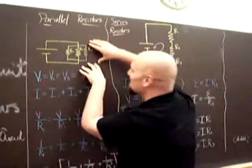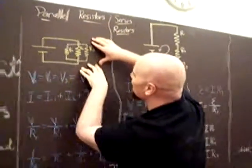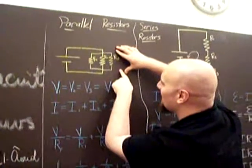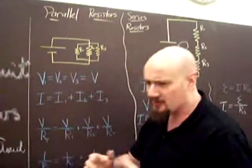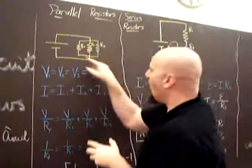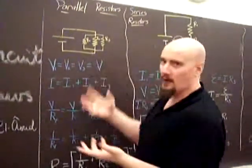So let's start with some parallel resistors. R1, R2, R3 in parallel. We want to try to find a way to represent all of these circuits as one number.